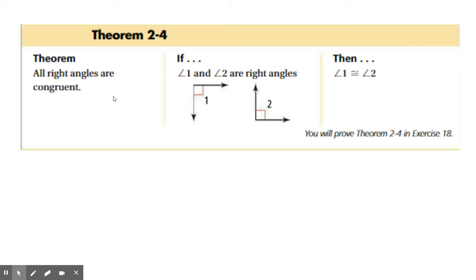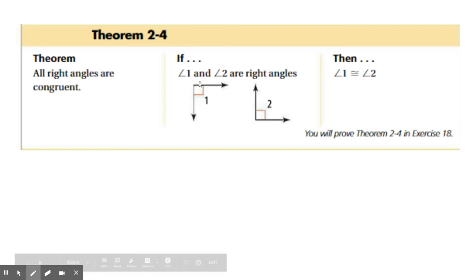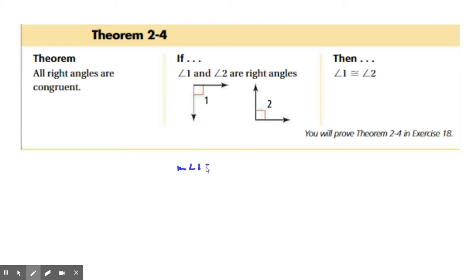So we have Theorem 2.4. It says all right angles are congruent. This should make sense to you, right? Let's take a look at this picture. Angle 1 and angle 2 are right angles. What does that mean? Well, they're marked as right angles. That means that the measure of angle 1 is 90 degrees, and the measure of angle 2 is also 90 degrees.